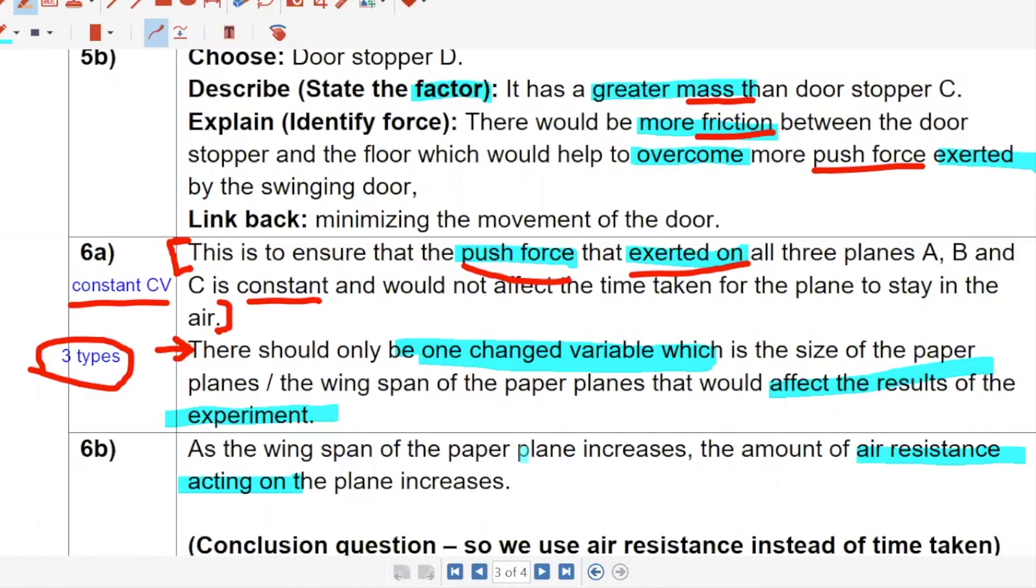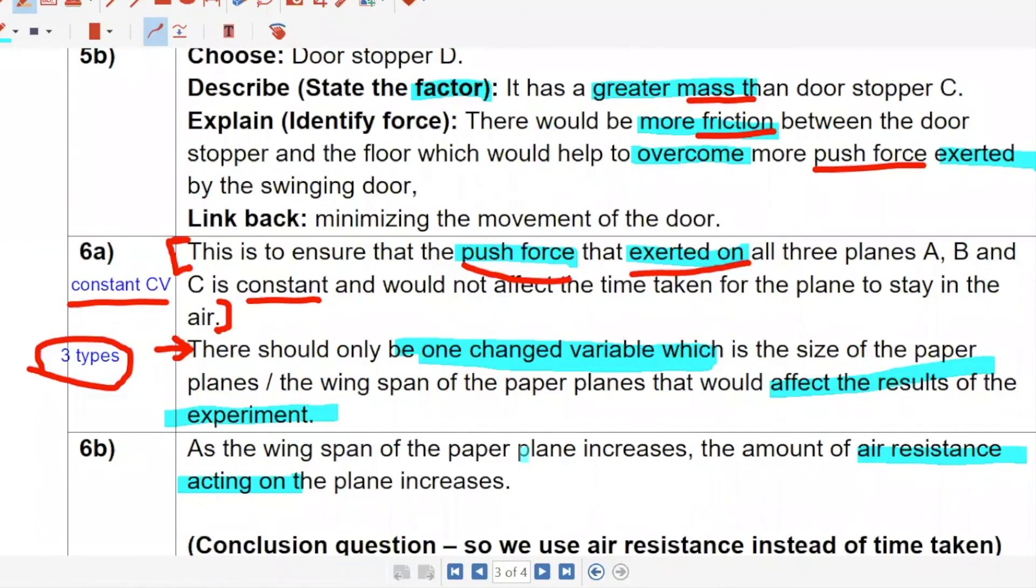You cannot use air resistance for relationship. Because relationship is whatever, unless they ask you about what's the relationship between air resistance and the plane. But if they never ask you that, you cannot create your own things.